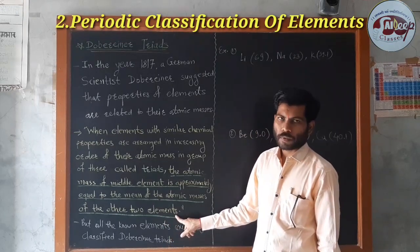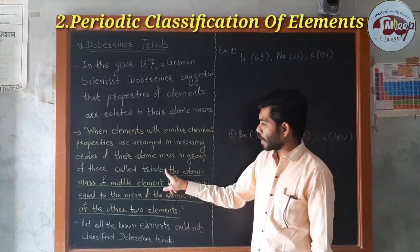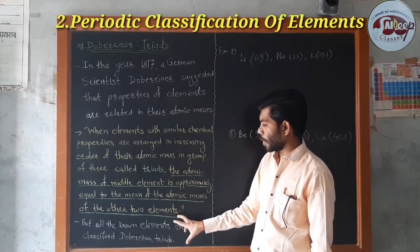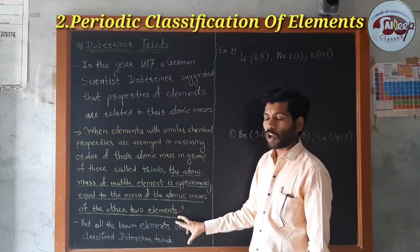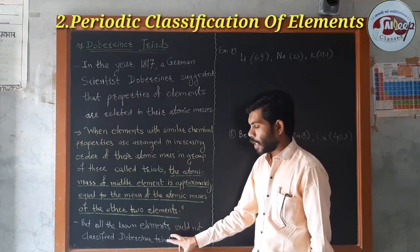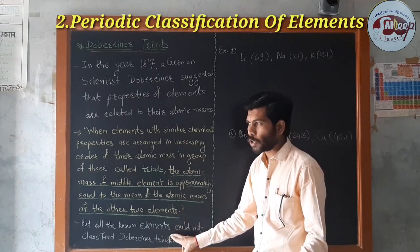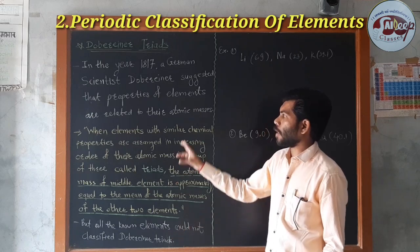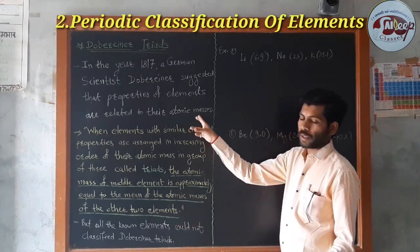This is the Triads definition and Dobereiner's law. These are also the limitations of the Dobereiner's law. This is the introduction of Dobereiner's law.